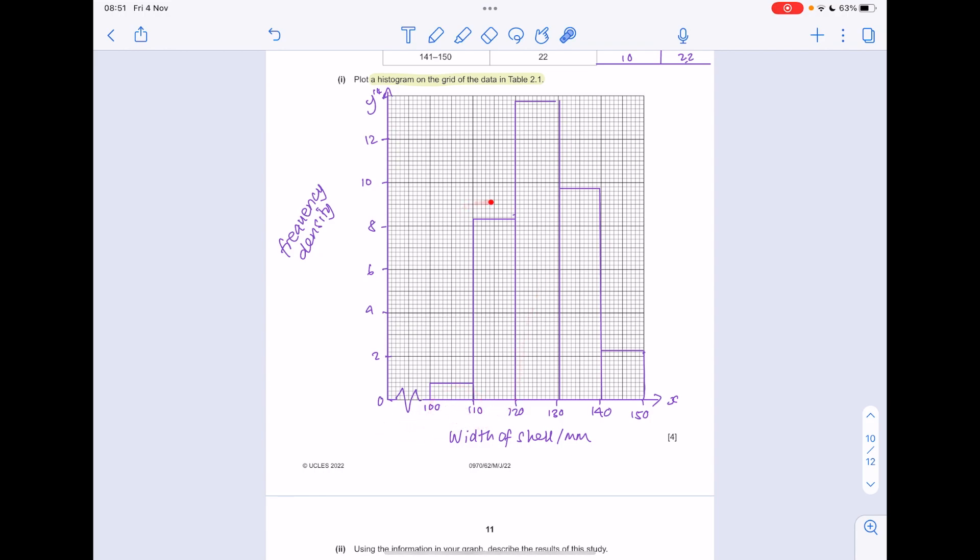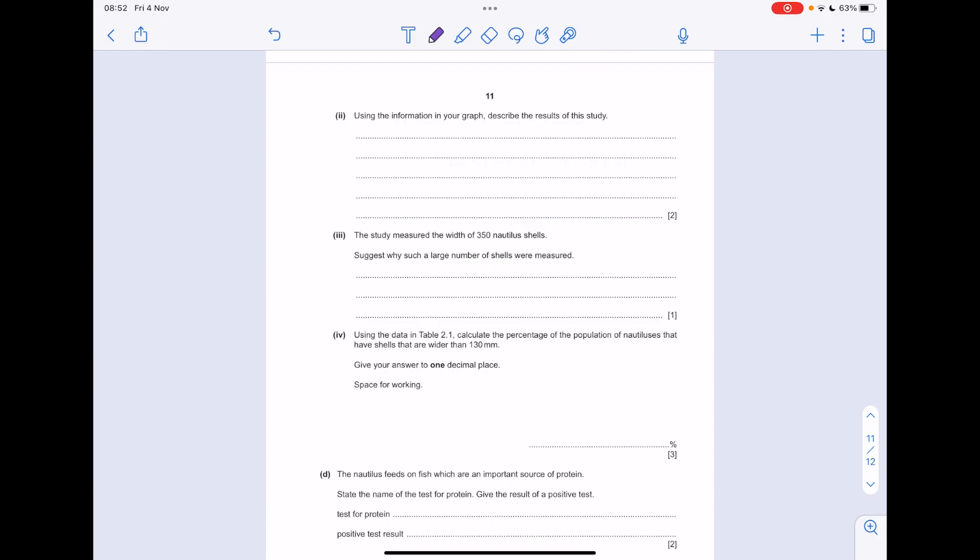Using the information in your graph, describe the results of this study. We can see that initially, as the width of the shell increases, the number of shells at that width increases, then we can see it begins to decrease. What's the most common shell width? Well, it's from 121 millimeters to 130. What about the least common? That's 101 to 110, but we only need two separate points here.